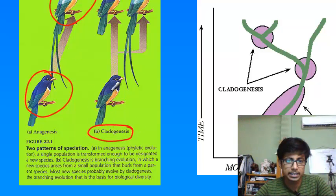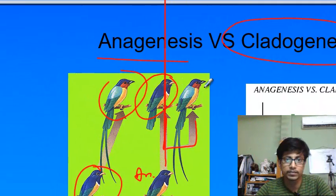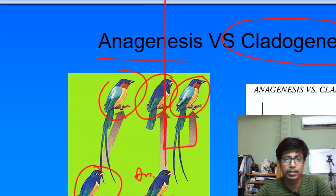While cladogenesis means there will be an ancestor and from that ancestor it branches twice. This is one offspring, this is another offspring, and there are two different types. So these are the differences between anagenesis and cladogenesis.